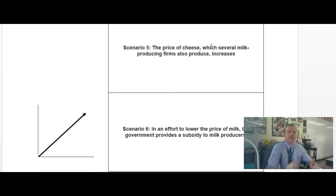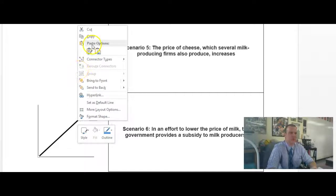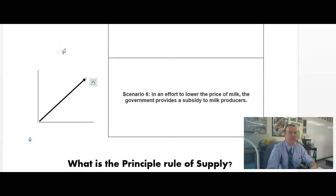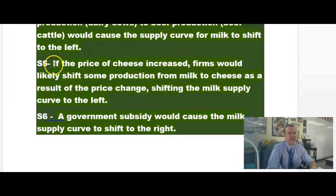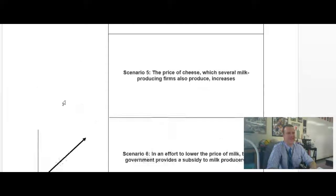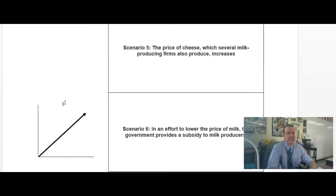So the price of cheese, which several milk producing firms also produce increases. So the price of cheese, okay. It also produces increase. Okay. Let's read this so that way we can do this together. Okay. So it says for scenario five, if the price of cheese were to increase, firms would likely shift some production from milk to cheese as a result of the price change, thus shifting the milk supply curve to the left. If we think about it, right? You're like, uh, that doesn't make any sense. It will.